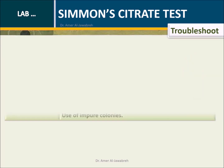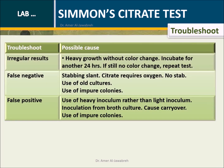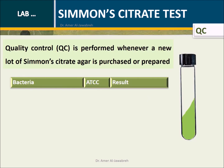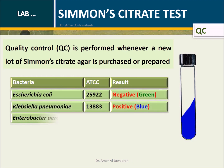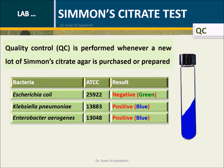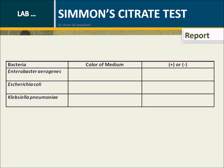Troubleshoots: Review possible causes for unexpected results. Quality control is performed whenever a new lot of Simmons citrate agar is purchased or prepared, using a list containing ATCC bacteria and expected results. Report results using the provided report form.